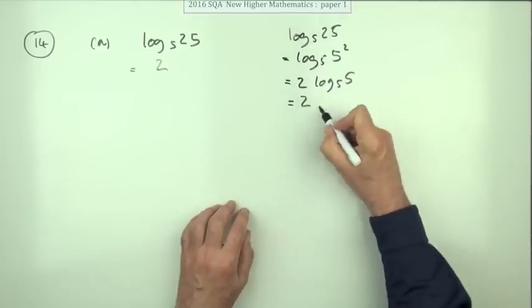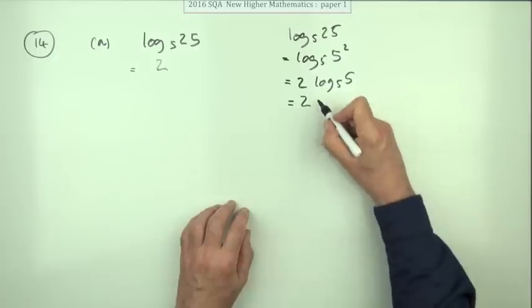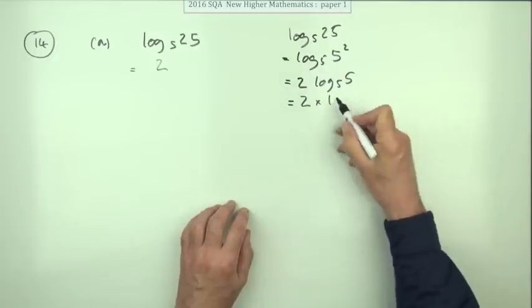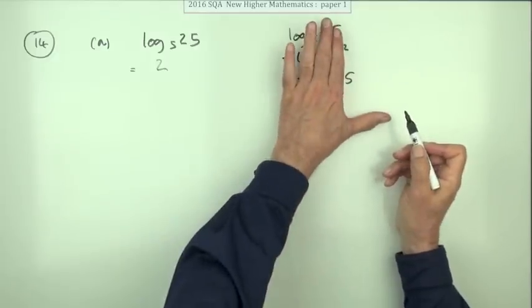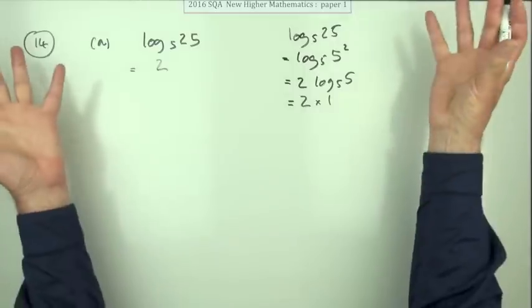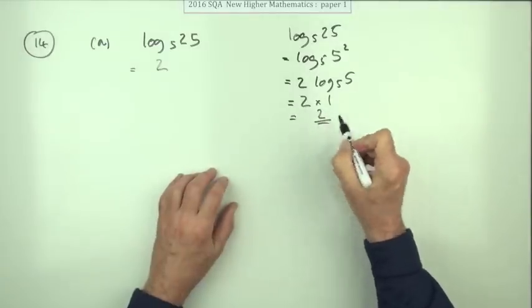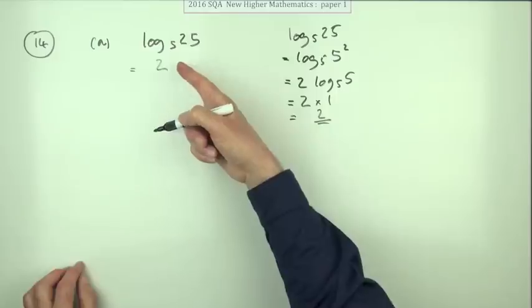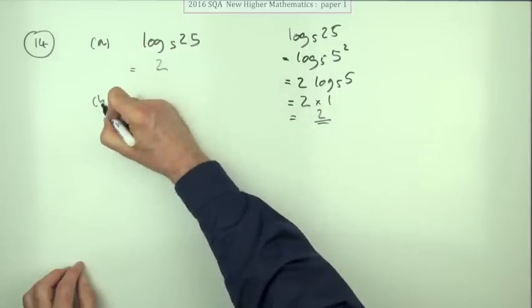Then I can take that out to the front and make it log base 5 of 5. And then I can say, now what is log base 5 of 5? Well, it's 1, because 5 is 5 to the power 1, and then arrive at the 2. I'm pretty sure you should get the mark just for stating 2 straight away though.